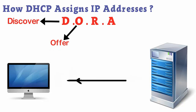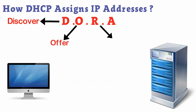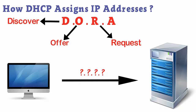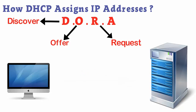The second step is Offer. Each DHCP provider hears the message, recognizes the unique hardware address of the computer, and sends a message back offering its services to that computer. The third step is Request — the computer selects a DHCP provider from its offerings and then sends a request to that provider asking for an IP address assignment.